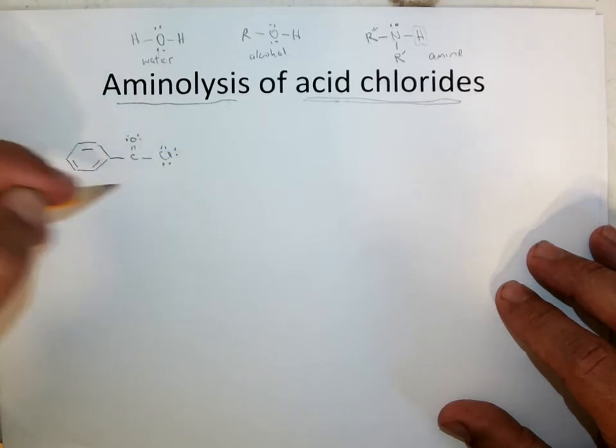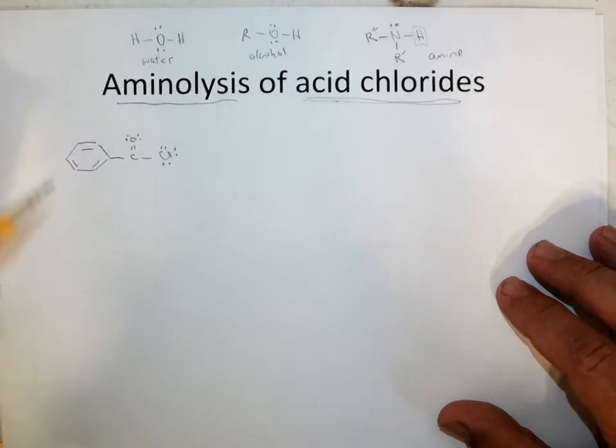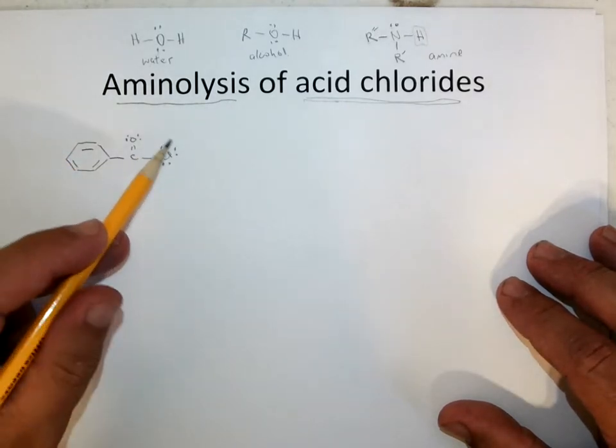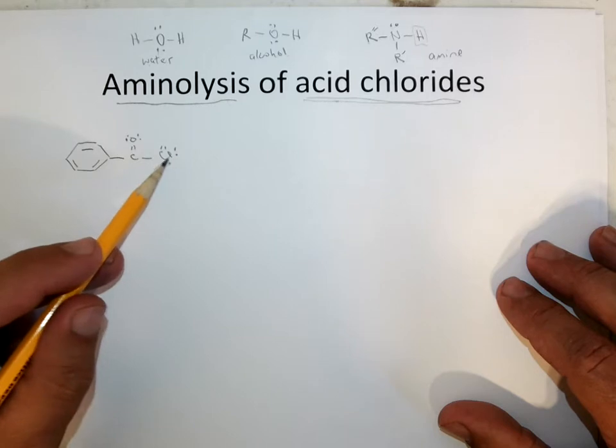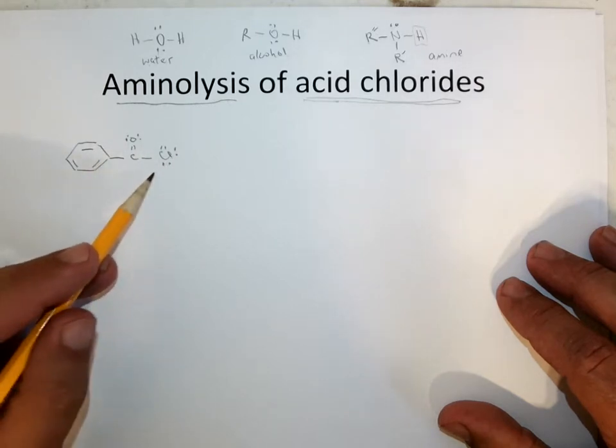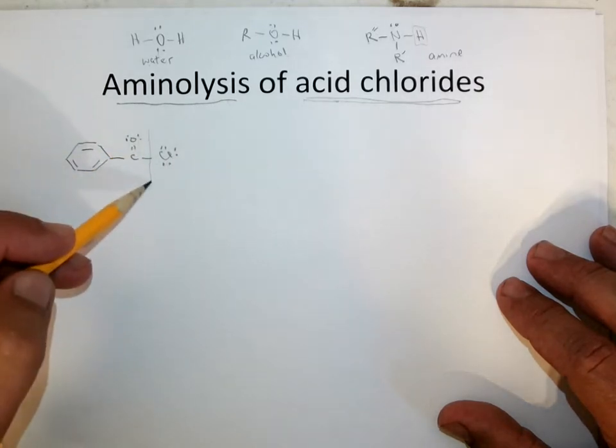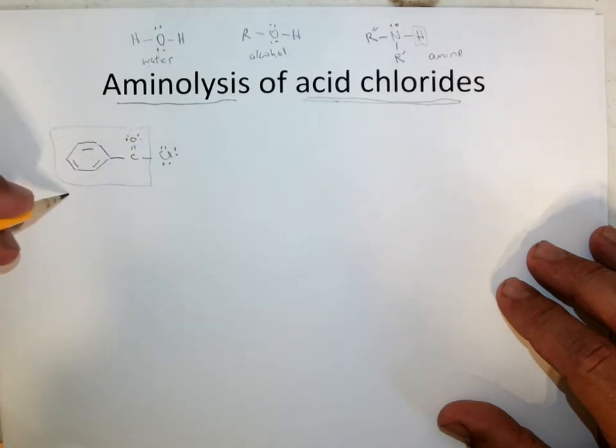And whenever you want to try to name one of these guys, you always want to think about the parent acid. So if this chloride was an OH instead, what would this compound be? It would be benzoic acid. So that makes this group a benzoyl group.